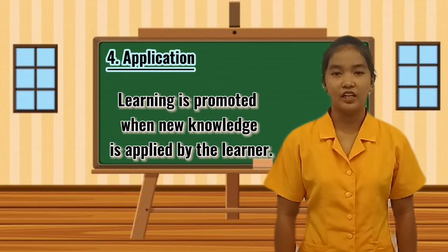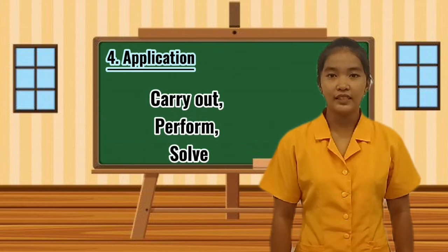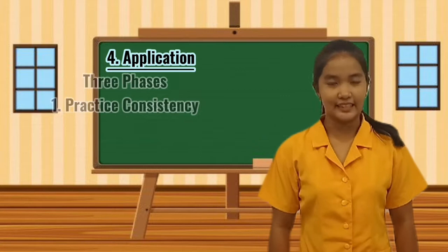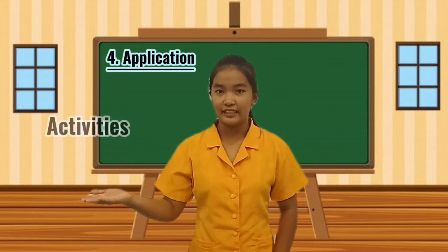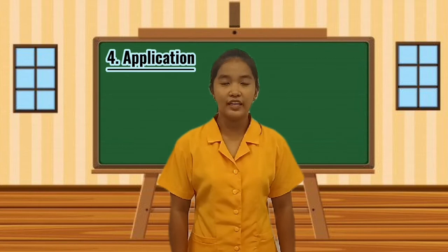The fourth principle of Merrill's Principles of Instruction is application. Learning is promoted when new knowledge is applied by the learner. Here, students are encouraged to carry out, perform, and solve a task on their own. This gives them the ability to see the challenges and obstacles firsthand. The first phase is practice consistency — align practice activities with learning outcomes. As an educator, we must be consistent in providing activities, assessments, and evaluations that are constructively aligned to learning outcomes so that learners can complete tasks using their knowledge.